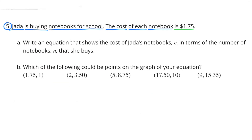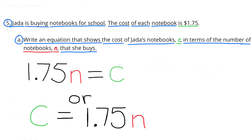Number five: Jada is buying notebooks for school. The cost of each notebook is $1.75. Part a: write an equation that shows the cost of Jada's notebooks C in terms of the number of notebooks n she buys. I wrote: $1.75 × n = C, or equivalently C = $1.75 × n.